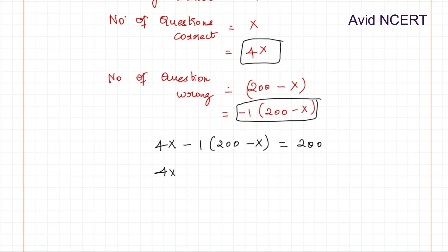Which is 4X minus 200 minus into minus plus X, which is 1X equals 200. So 4X plus 1X equals 5X minus 200 equals 200. 200 goes to the other side, which means 5X equals 200 plus 200, which equals 400.